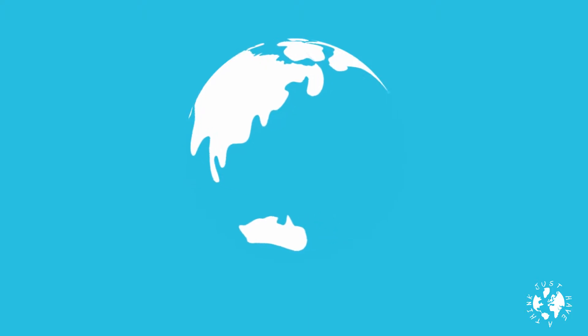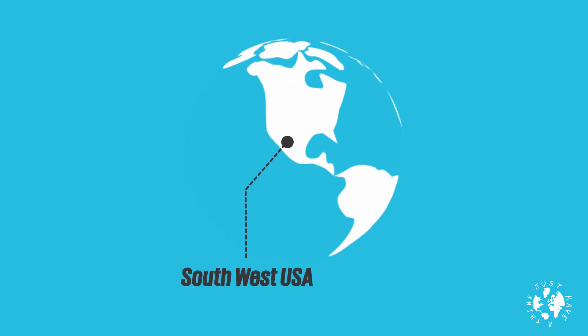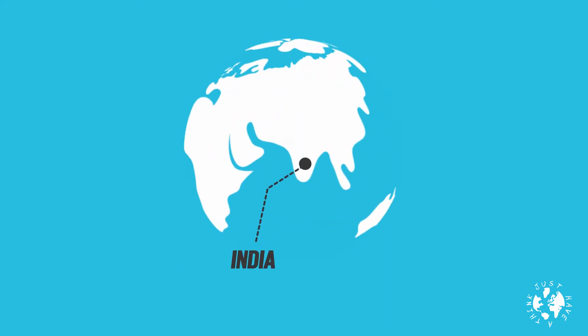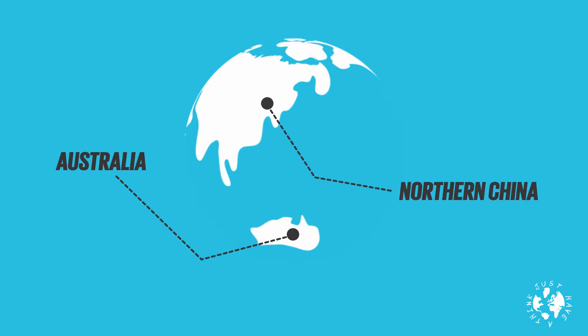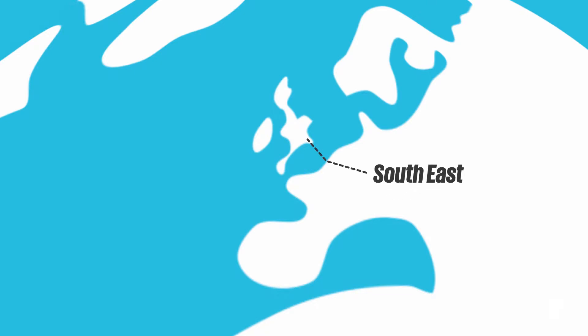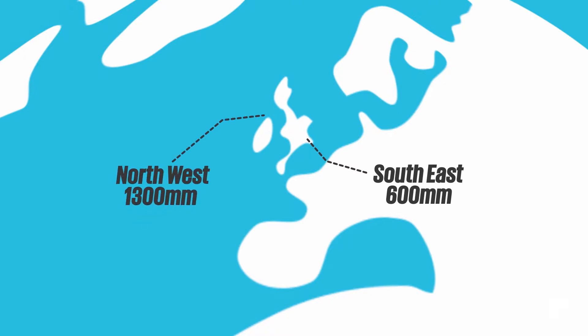1.2 billion people live in areas of water scarcity in places like southwestern United States, India, Spain, North Africa, Australia and northern China. Even here in the UK there are significant variations of availability around the country. The southeast where I live is the driest region, receiving only 600 millimetres of rain on average per year, compared to about 1,300 millimetres up in the Lakes and 1,600 millimetres further up in the Highlands.